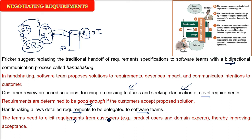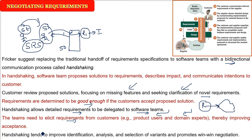From customers — for example, product users, domain experts — you can't just write in English; you have to know exactly what you have to do. So you are actually increasing acceptance because everything is being accepted by the user and elicited by the software team. In this handshaking way of negotiating requirements, it will improve the identification, both parties can analyze, all the variants can be catered for, and it promotes a win-win negotiation because the user is happy and you can make it work.